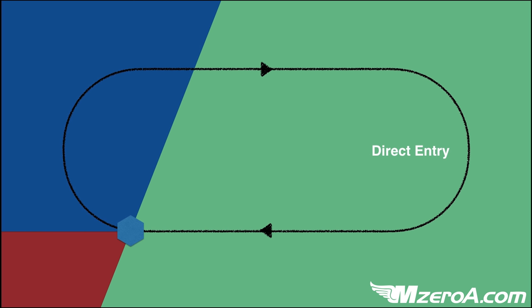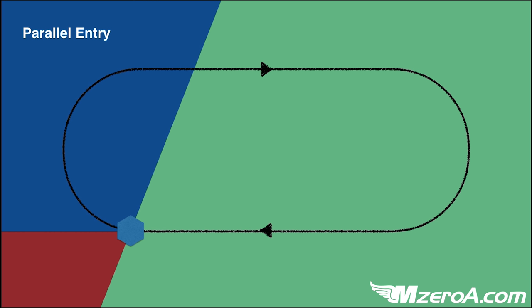So let's talk about the three types. First, in the green area, you'll see the direct entry. If I'm approaching this hold from anywhere in the green area, I can simply make a direct entry. I fly right to the station and make a direct entry — a straight entry right on into that hold. I'd hit my fix, make a right turn, and be locked into my hold. Direct entry is by far the easiest entry to make.